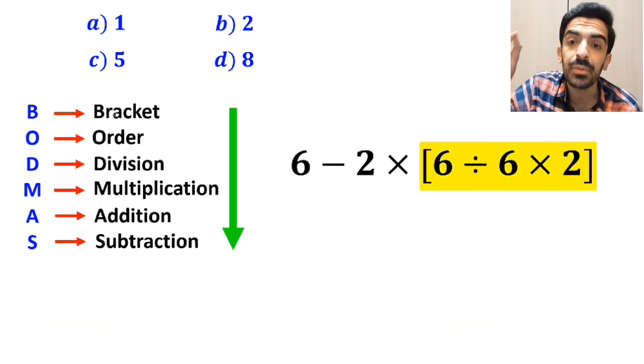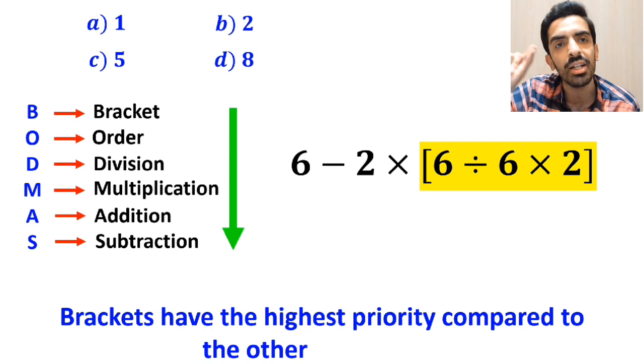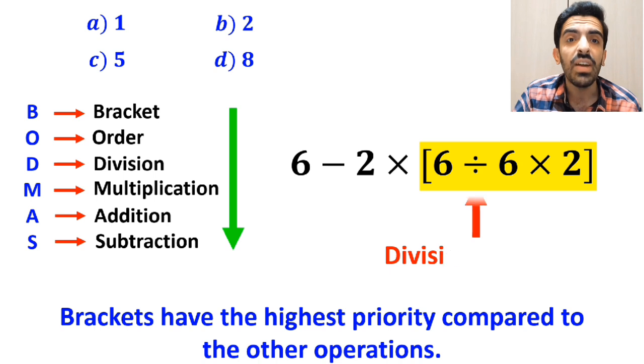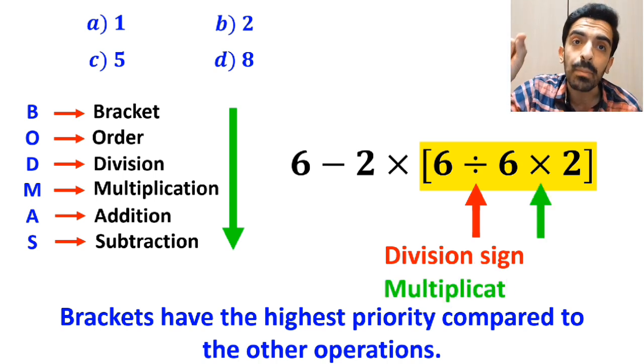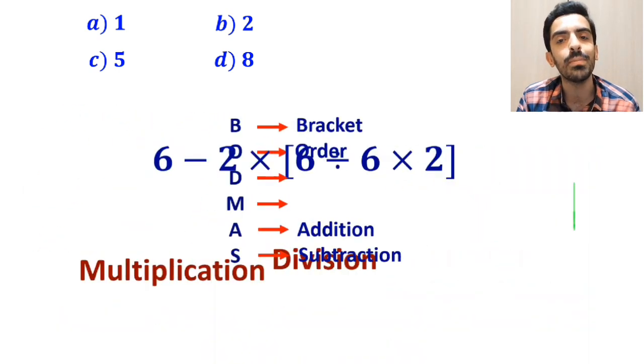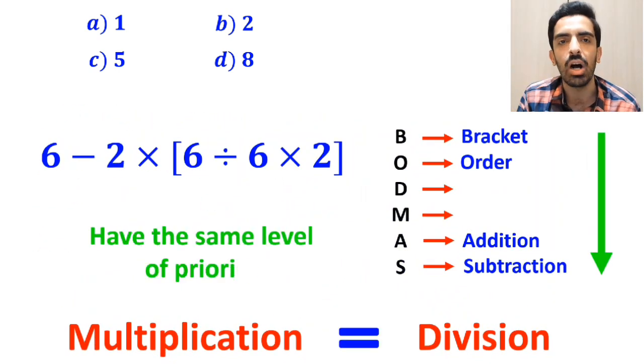First, we start with the expression inside the brackets, because brackets have the highest priority compared to the other operations. Alright, as you can see on the screen, inside the brackets we have a division sign followed by a multiplication sign. It's very important to keep in mind that according to the BODMAS rule, multiplication and division have the same level of priority.